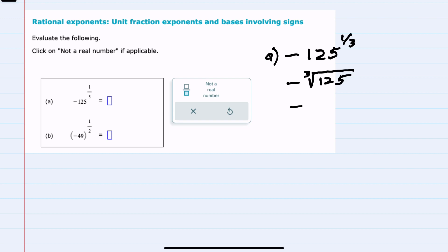To evaluate that third root, I can rewrite the 125. 125 is a perfect cube. That is 5 to the 3rd power.